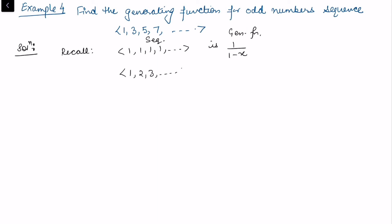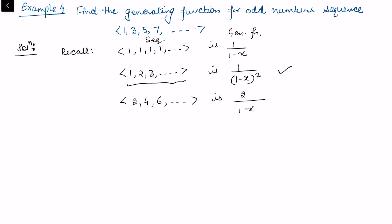And we have also done: for even terms 2, 4, 6, ..., we multiplied the natural numbers generating function by 2, giving the generating function 2/(1 - x)².